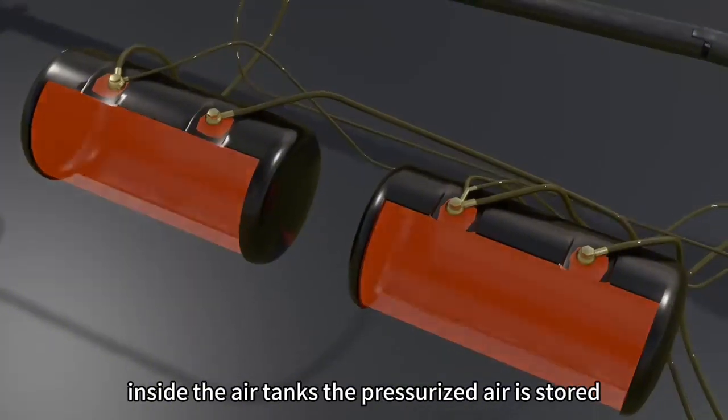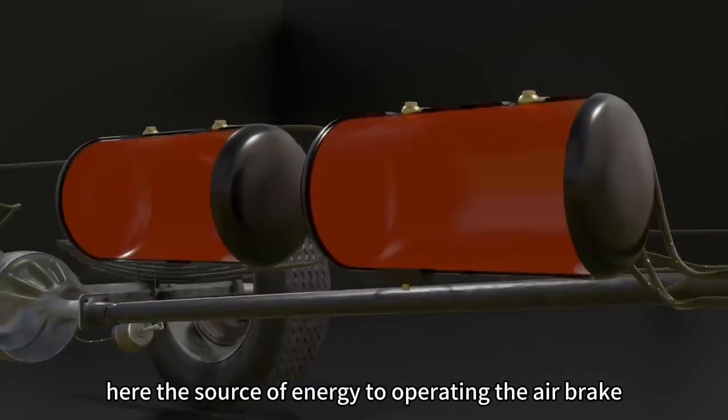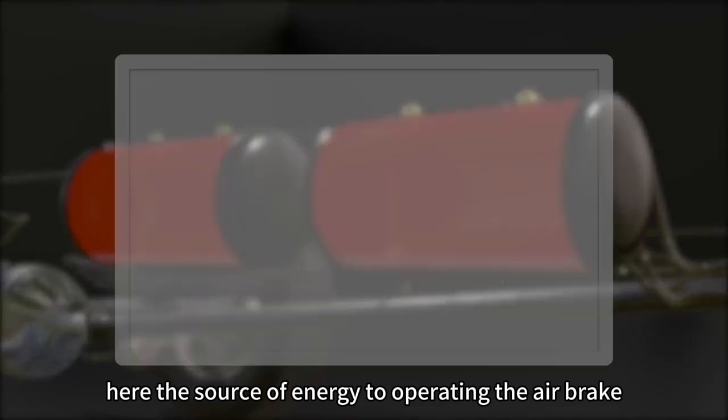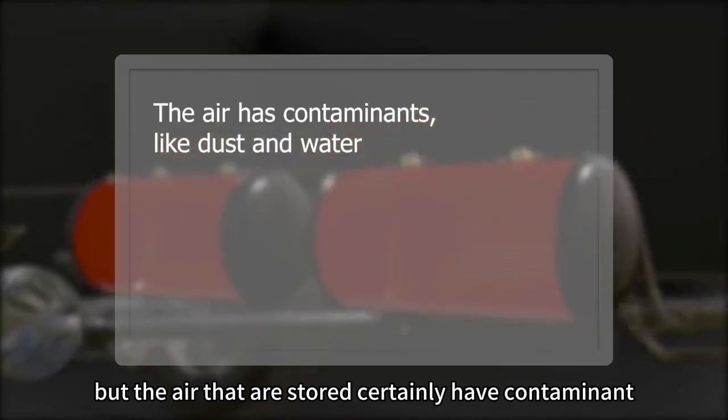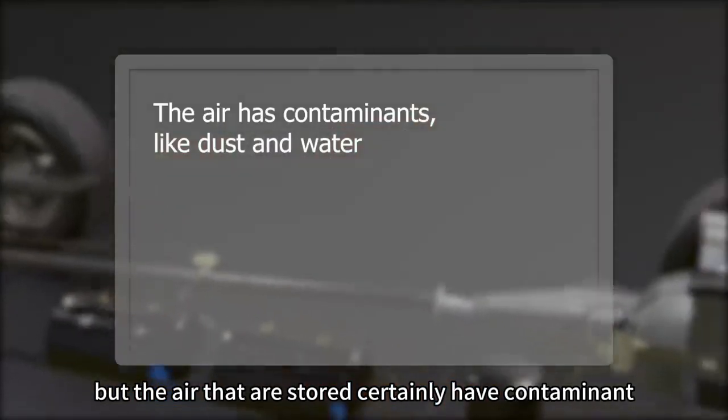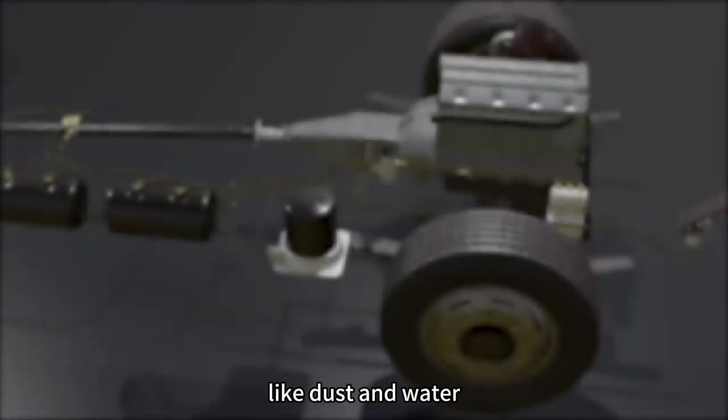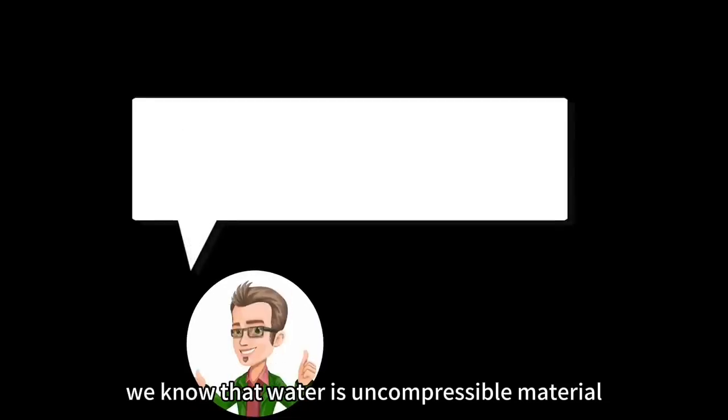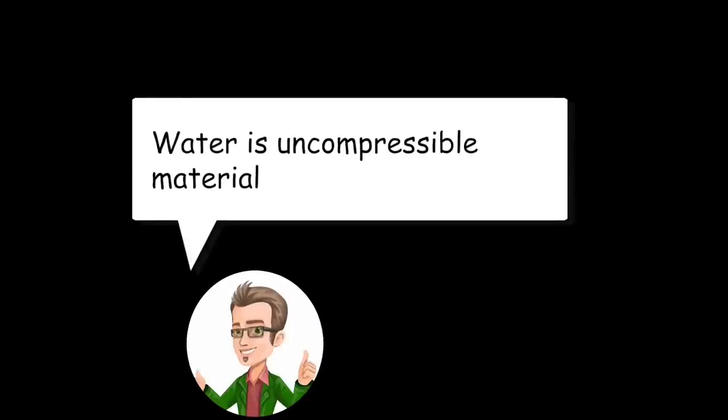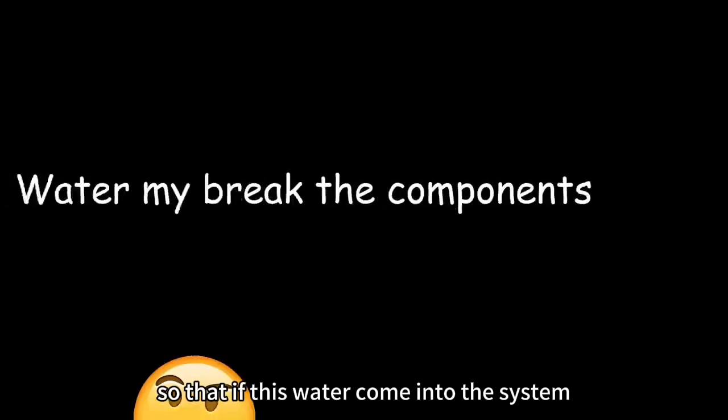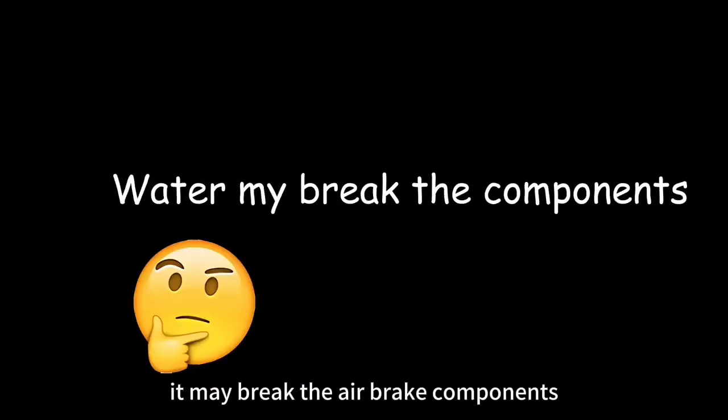Inside the air tanks, the pressurized air is stored. Here is the source of energy to operate the airbrake. But the air that is stored certainly has contaminants, like dust and water. We know that water is uncompressible material. If this water comes into the system, it may break the airbrake components.